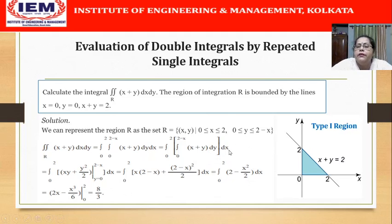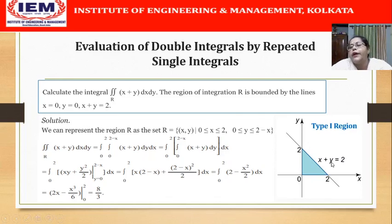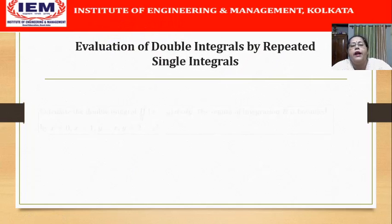So the problem is clear. We treated this as a Type 1 region, with y varying from the lower curve y = 0 up to the straight line x + y = 2, giving y = 2 − x, and varying the vertical strip from x = 0 to x = 2. Let us now look into another problem of this kind.